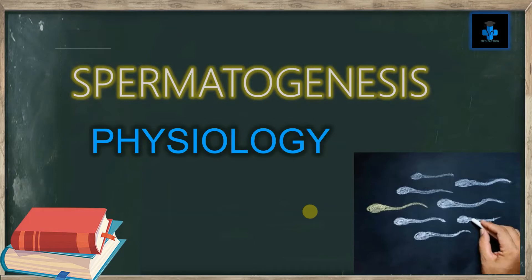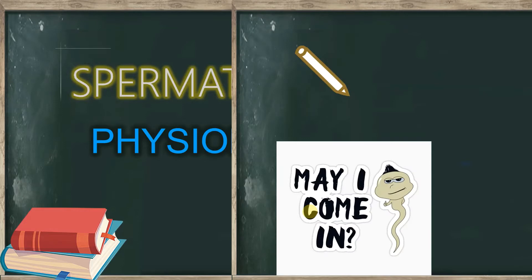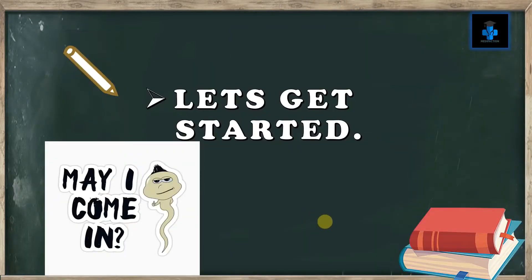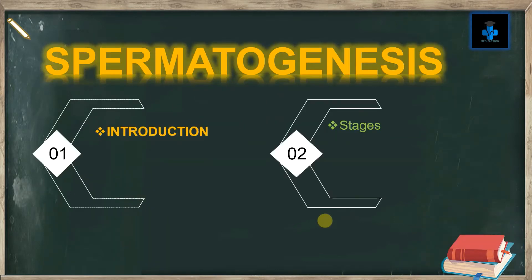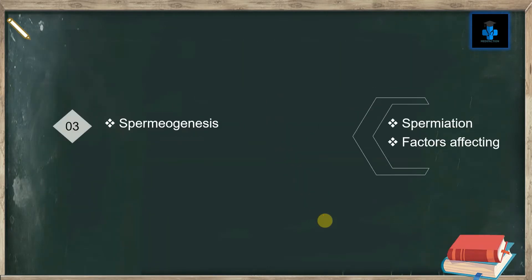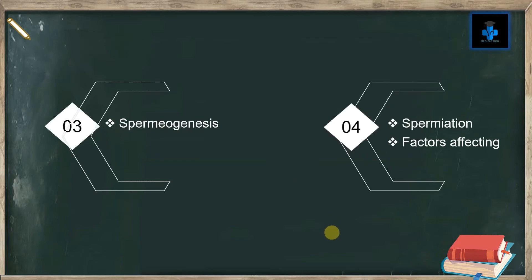Hey guys, welcome to Medifaction. Today let's learn about the physiology of spermatogenesis. Spermatogenesis is the production of sperms from the primordial germ cells. In this video I will be enumerating an introduction, stages of spermatogenesis, spermiogenesis, spermiation, and also the factors affecting spermatogenesis.